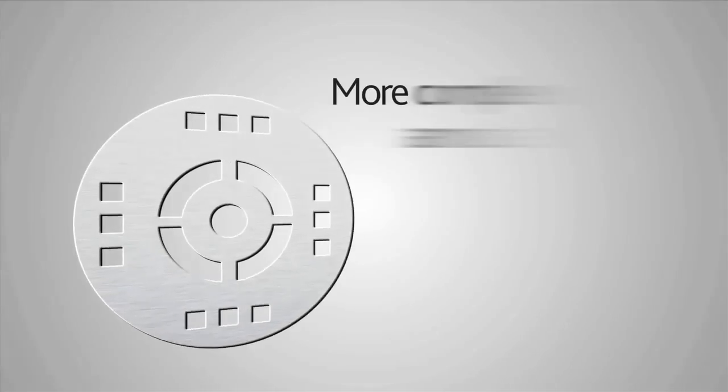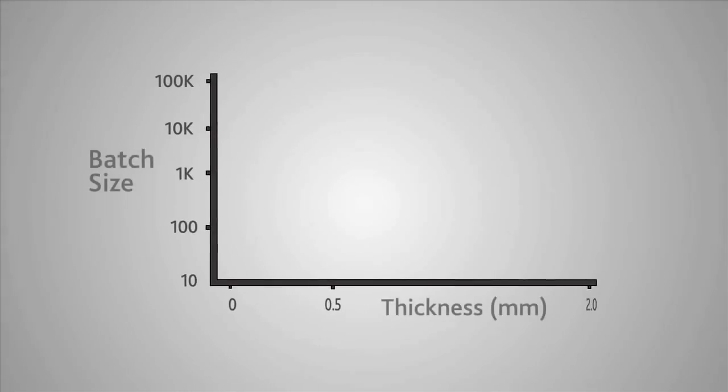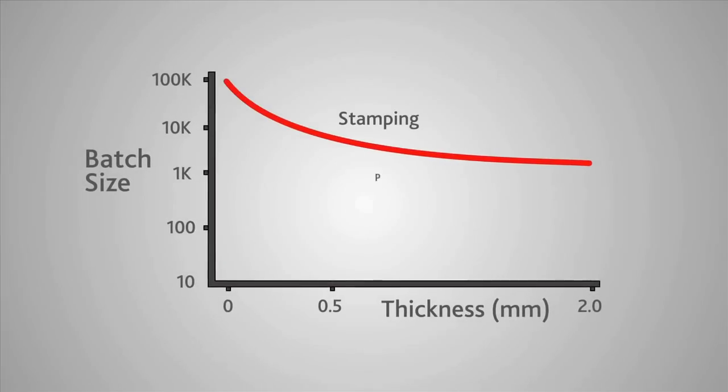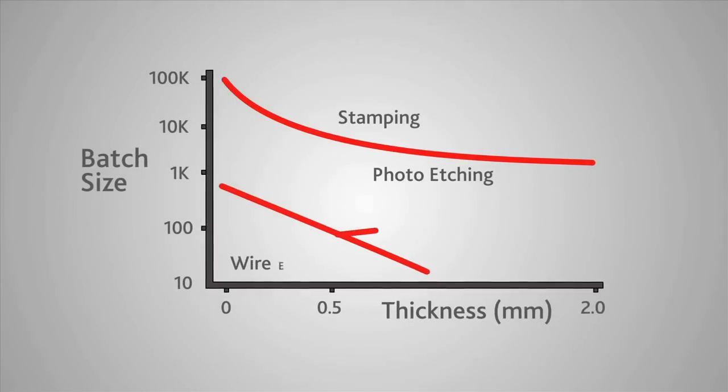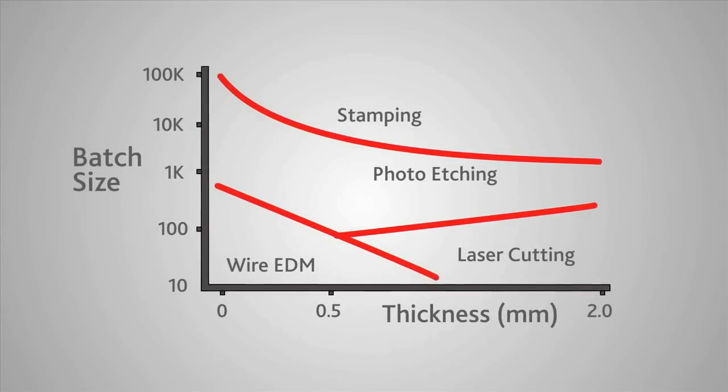Photo etching really excels when you are producing a very complex part. Unlike laser cutting, we etch all the features simultaneously, and so the more complex the components, the more the economics favor photo etching as a method of production.